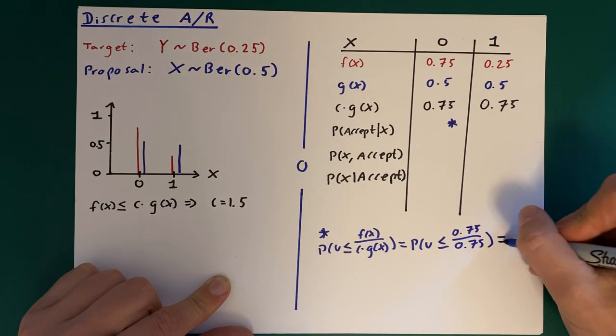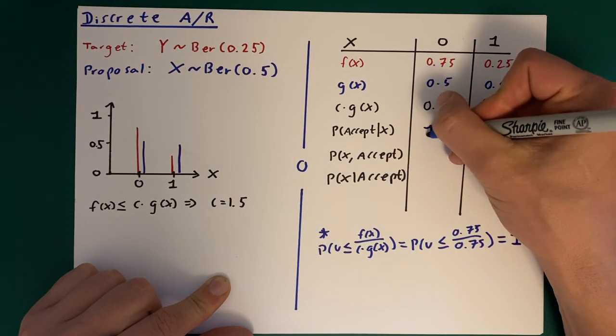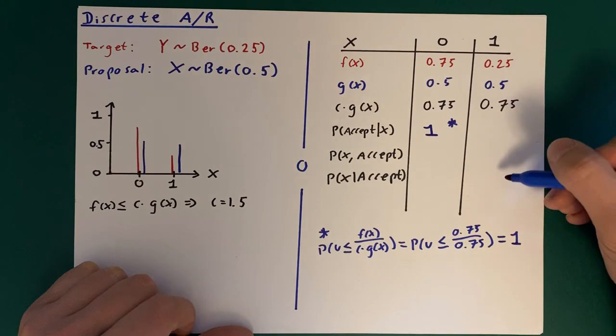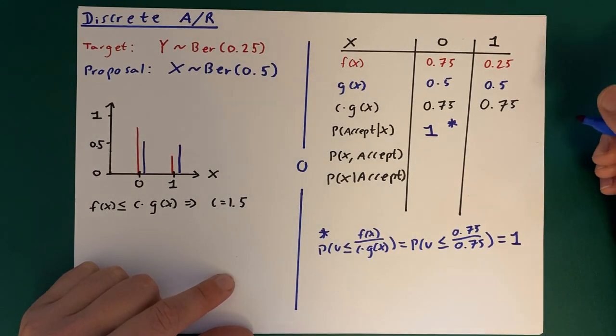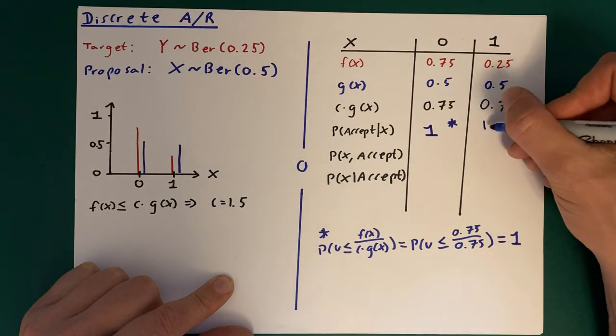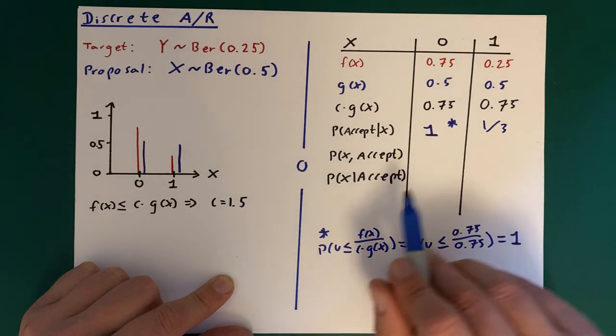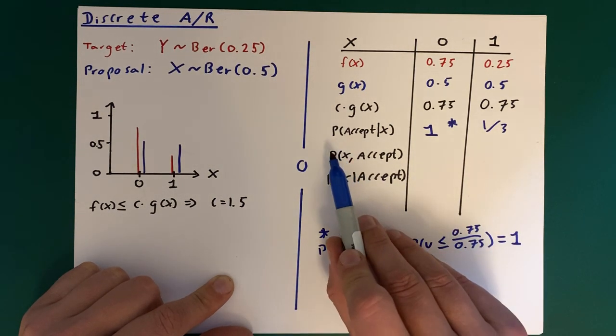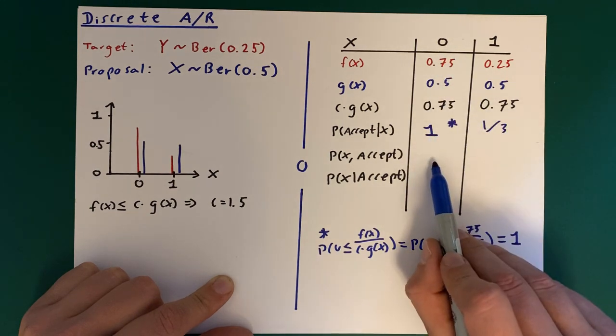And that's going to be 1, so we'll put a 1 here. Now I won't do all the calculations, but you're free to fill these in yourself and I'll provide the answers. So here we get 1/3. Then we have over here the probability of x being 0 and accepting.